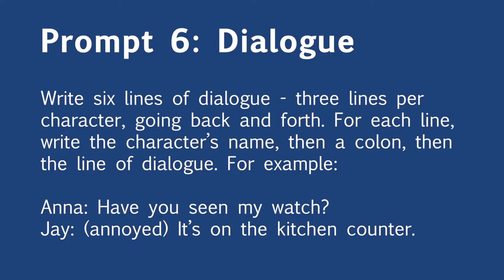For your next prompt, you're going to start writing dialogue. Write a total of six lines of dialogue — three lines for each character going back and forth. It's up to you who speaks first. You can use stage directions within these lines if you want. For each line, write the character's name, then a colon, and then their dialogue. Stage directions go in parentheses at the beginning of the character's line.